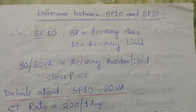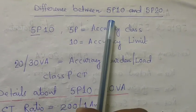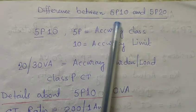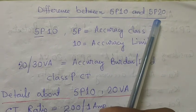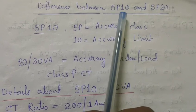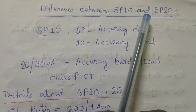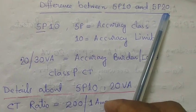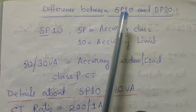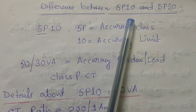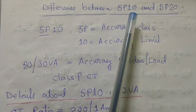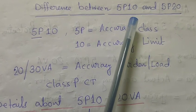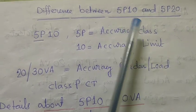Today's discussing topic is about 5P10 and 5P20. So what is 5P10 and what is 5P20? It is the parameter being used in current transformers — specifically the factors on which the current transformer's working principles depend.